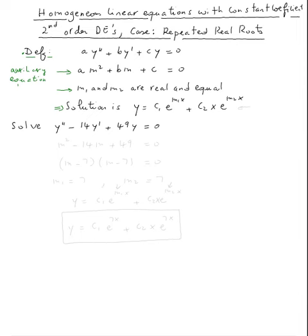So let's do this example. We're trying to solve the second derivative of y minus fourteen times the first derivative of y plus forty-nine y equals zero.